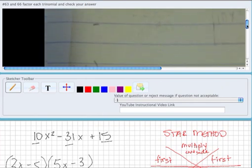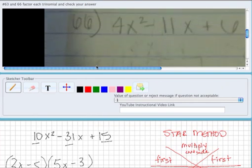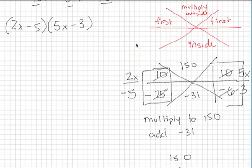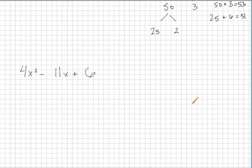Now let's take a look at your second one. 4x squared minus 11x plus 6. We're going to go ahead and use the star method again. I know it's a little difficult at first, but it eliminates any guessing, which is why this method is so great.